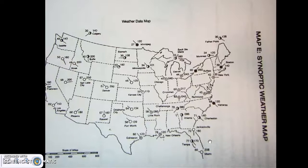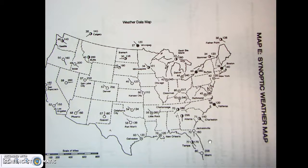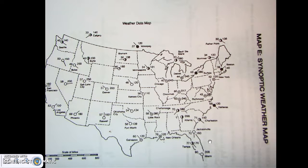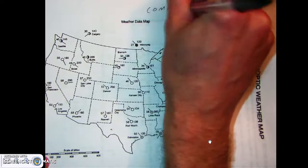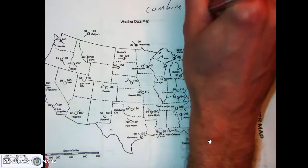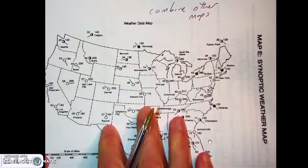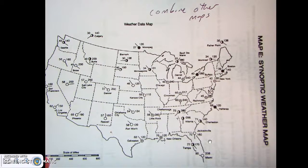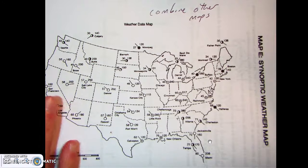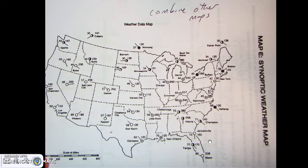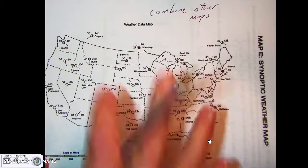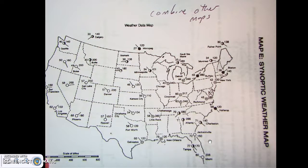Map E is where people tend to have a hard time. It says to refer to Maps B, C, and D, and draw isobars, wind patterns, and areas of precipitation on Map E — basically combining the other maps onto this one. You're going to overlay isobars, wind patterns, and precipitation on top of this map.